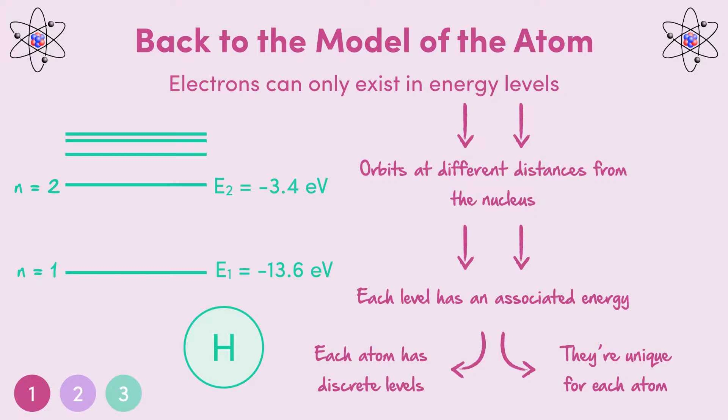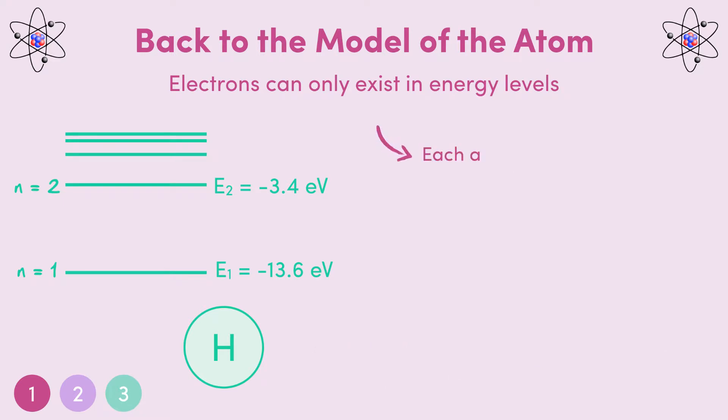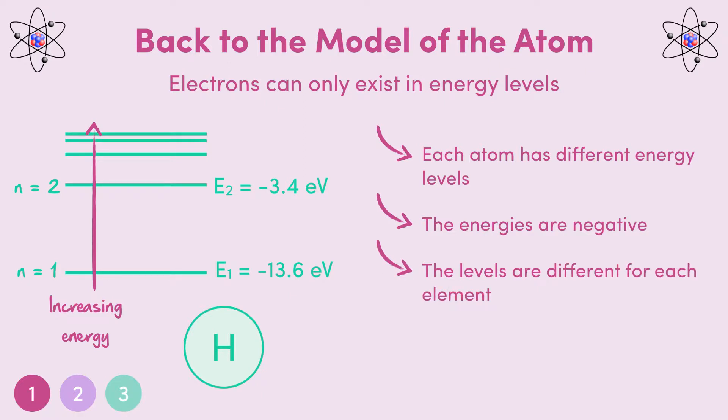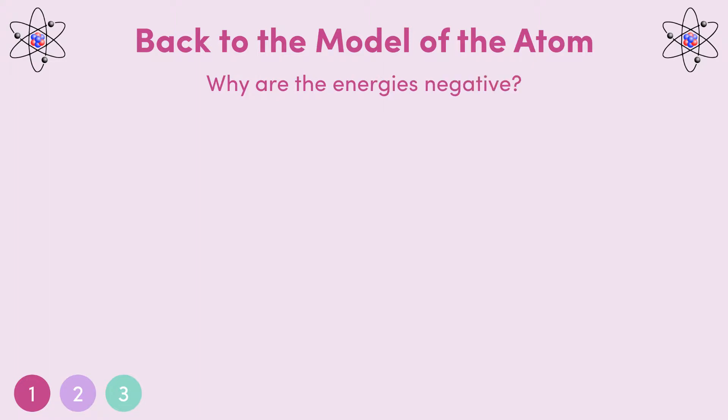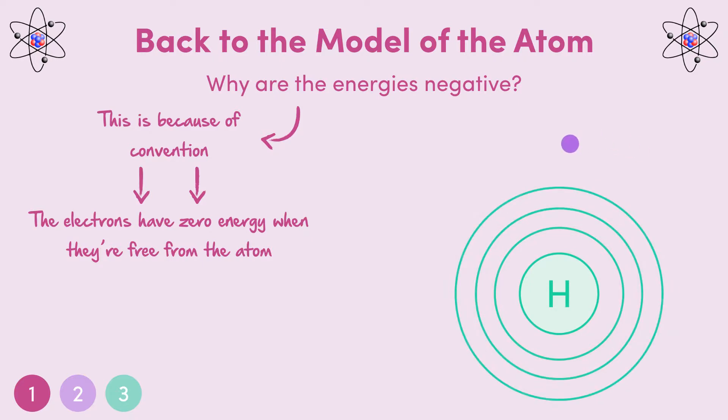So you can already see the key features. Each atom has different energy levels. The energies of these levels are negative, and they increase closer to zero as you get higher. The energy levels are different for each element, and electrons can only exist in these levels. Now, it might seem a bit confusing why these energies are all negative. This is because of convention. We say that the electrons have zero energy when they are completely free from the atom. So then, an electron orbiting an atom must have less than zero energy, or a negative energy. Don't worry too much if it's still a bit confusing. As I said, it's just a convention.